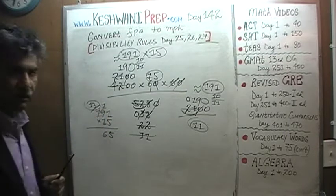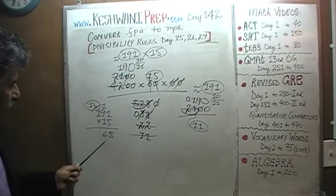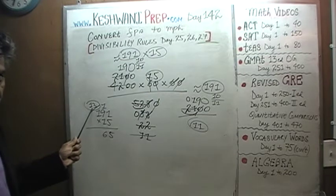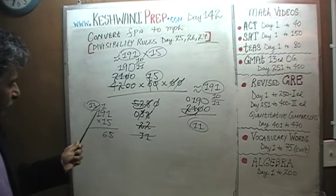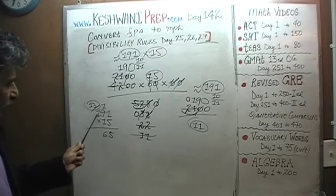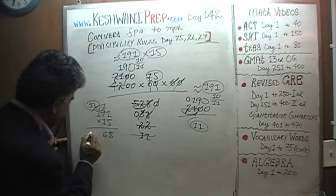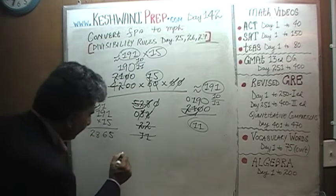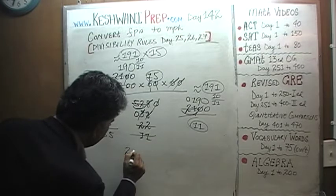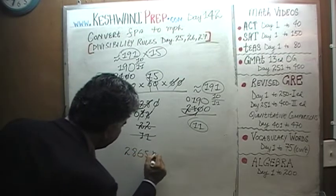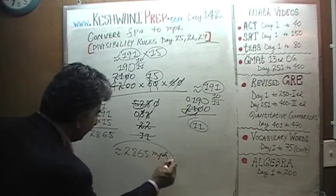135 plus 1 is 136, 6 carry 13. This is where things get prickly, we're going to carry 13 because it was 136, 6 carry 13. 15 times 1 is 15, 15 plus 13 gives us 28. The answer is 2865 miles per hour.